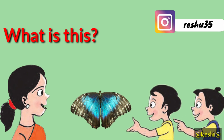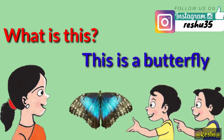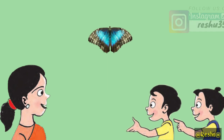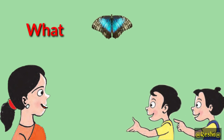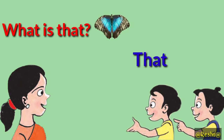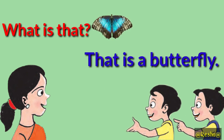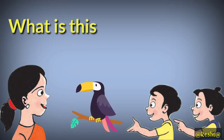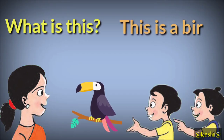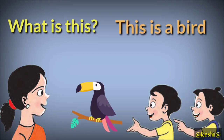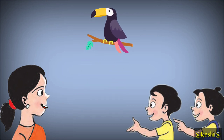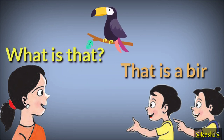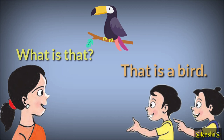What is this? This is a butterfly. What is that? That is a butterfly. What is this? This is a bird. What is that? That is a bird.